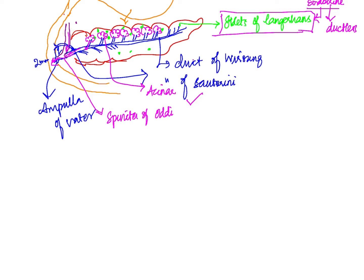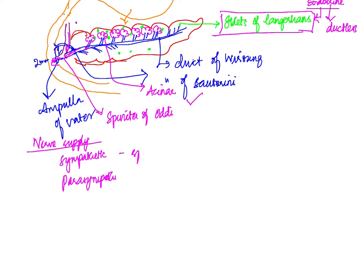Whenever food comes in, the secretions are allowed to enter the duodenum. The nerve supply is both sympathetic and parasympathetic. Sympathetic supply is through the splenic nerves, and parasympathetic is through the vagus nerve.